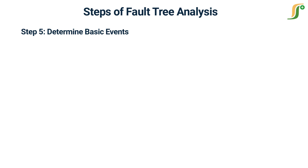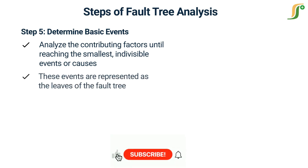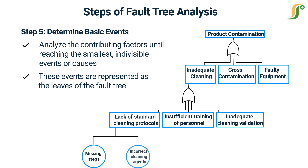In step 5, determine basic events. Continue analyzing the contributing factors until reaching the smallest, indivisible events or causes known as basic events. These events are represented as the leaves of the fault tree. For example, under lack of standardized cleaning protocols, specific issues may include missing steps in the cleaning procedure and incorrect use of cleaning agents.